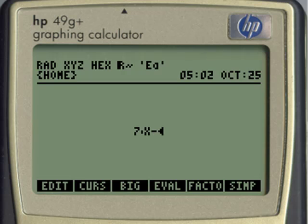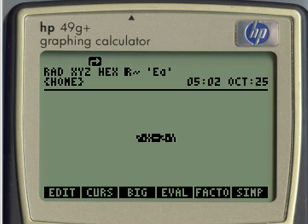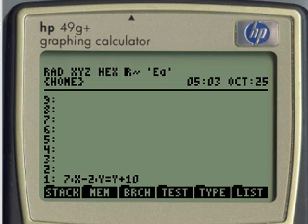7x minus 2y, select, select, select. All of that equal to y plus 10. And that is the first of our equations. Enter. 7x minus 2y equal y plus 10.